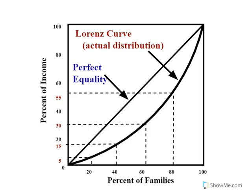So here is the Lorenz curve. You'll notice there is a line of perfect equality. If I pick a point on that line and say here's 20% of families, they control 20% of income — that's perfect equality. The actual Lorenz curve is different from that linear line; the Lorenz curve shows where we actually are. You can see here that 55% of income is controlled by 80% of families, so we're a little away from perfect equality.